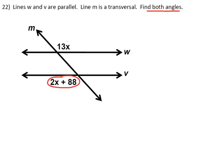This angle and this angle at the end are going to have the same number. As far as an angle measurement goes, they will have the same number. So they are equal to each other. They're congruent. So I'm going to set up 2x plus 88 is equal to 13x.